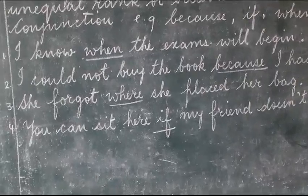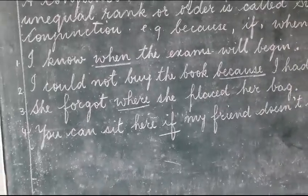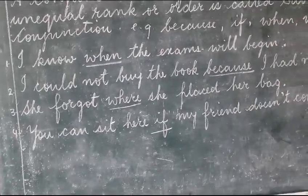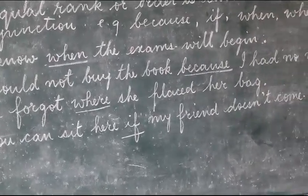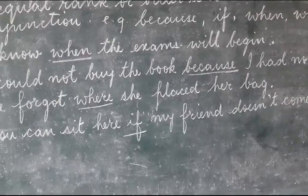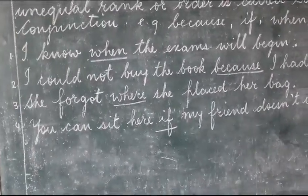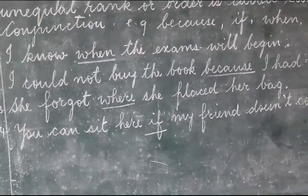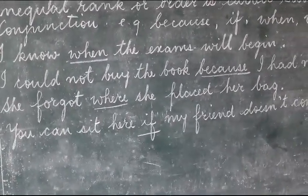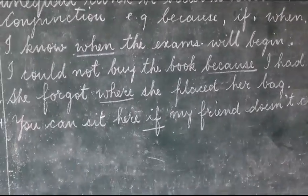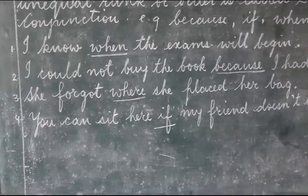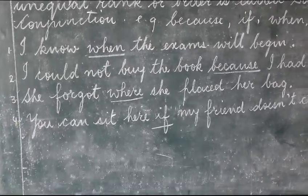Third one: She forgot — what did she forget? Where she placed her bag. So the full sentence is: She forgot where she placed her bag. The word 'where' has joined these two sentences together.